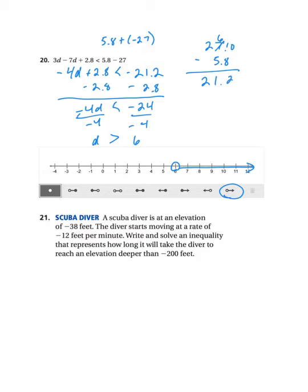Number 21, the scuba diver is at an elevation of negative 38 feet. So that's where he starts. He's moving at a rate of negative 12 feet per minute. And I want to know how many minutes it will be before the diver is deeper, less than negative 200 feet. So this is your starting inequality. I'm going to let you go ahead and do the solving part on that one on your own.